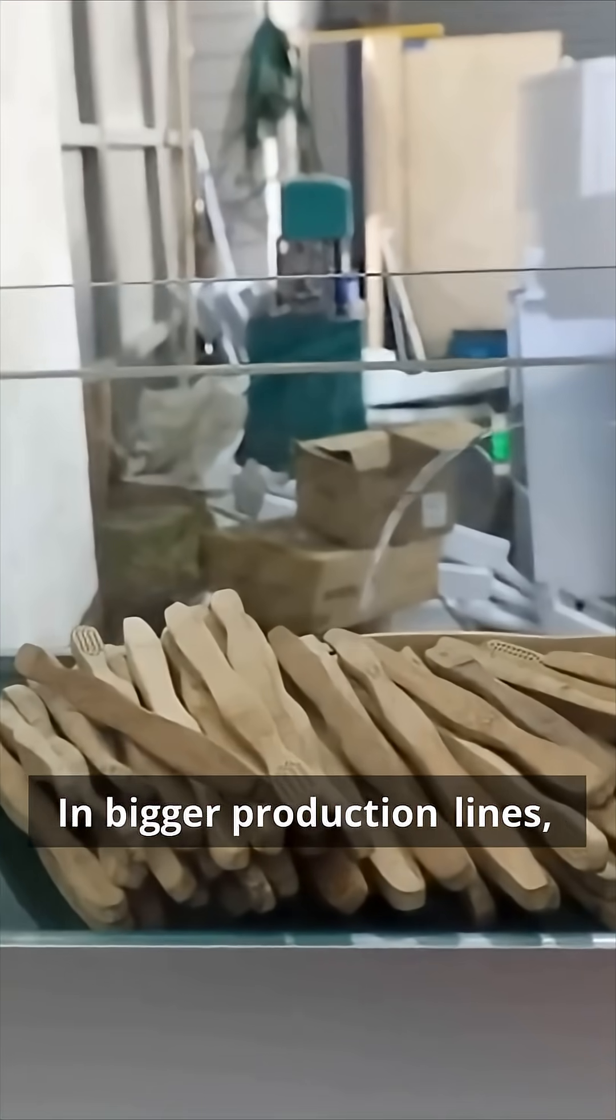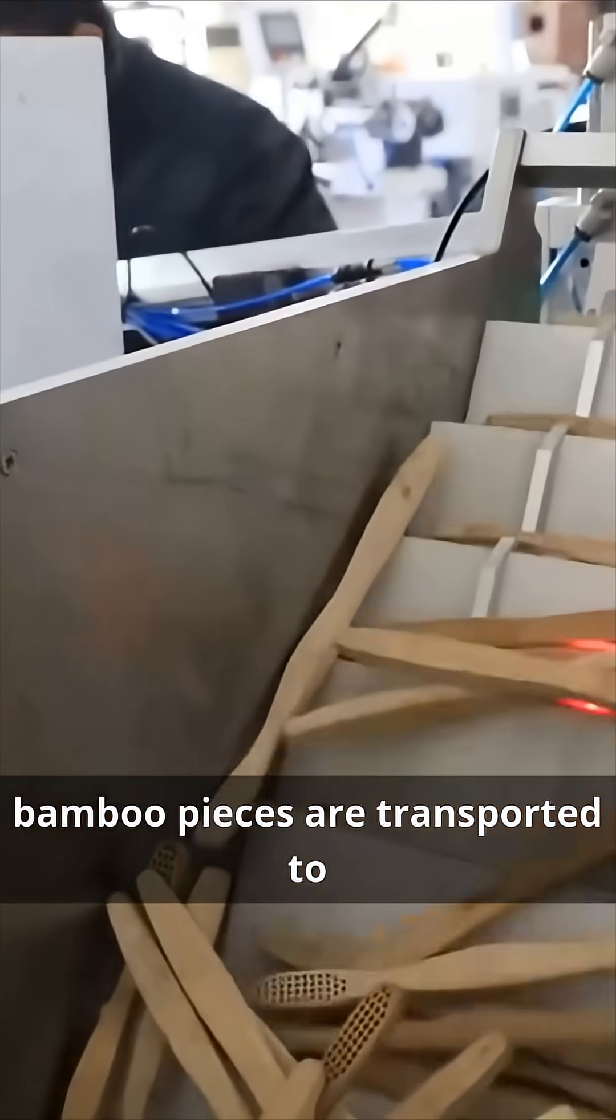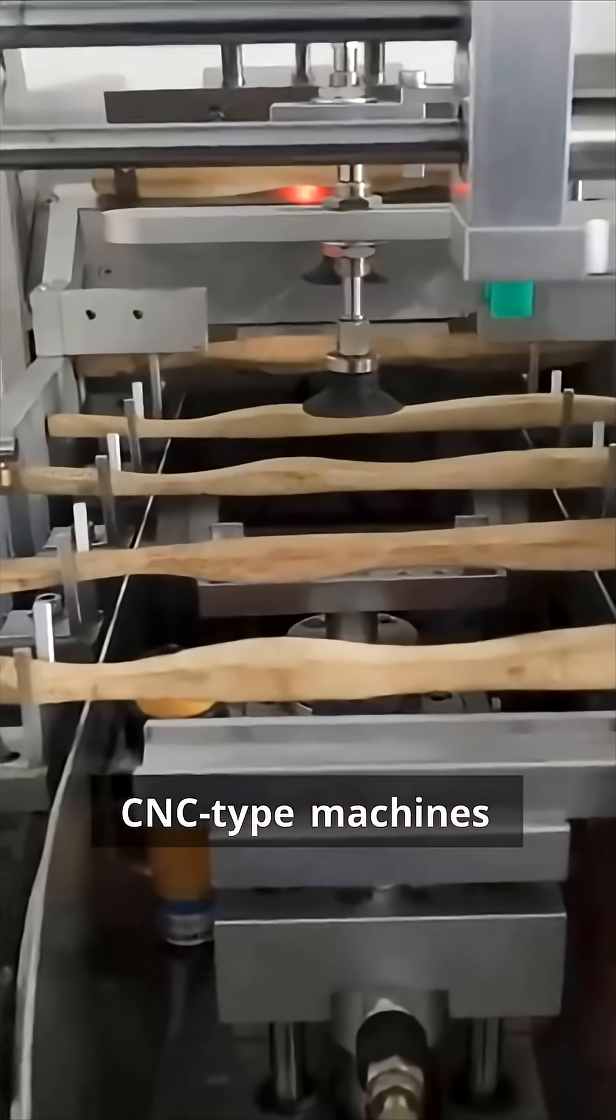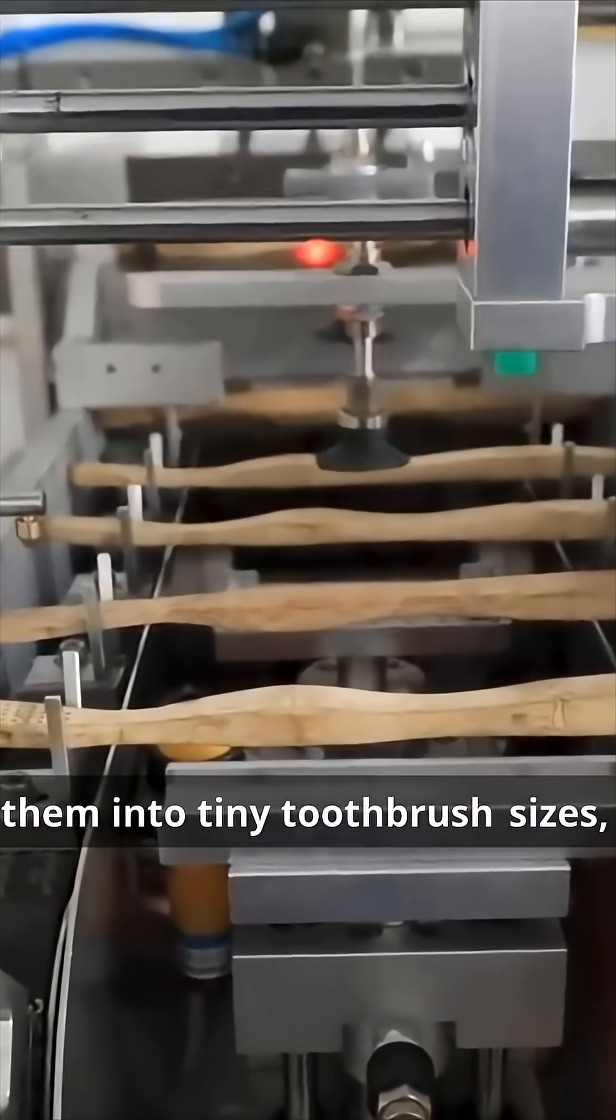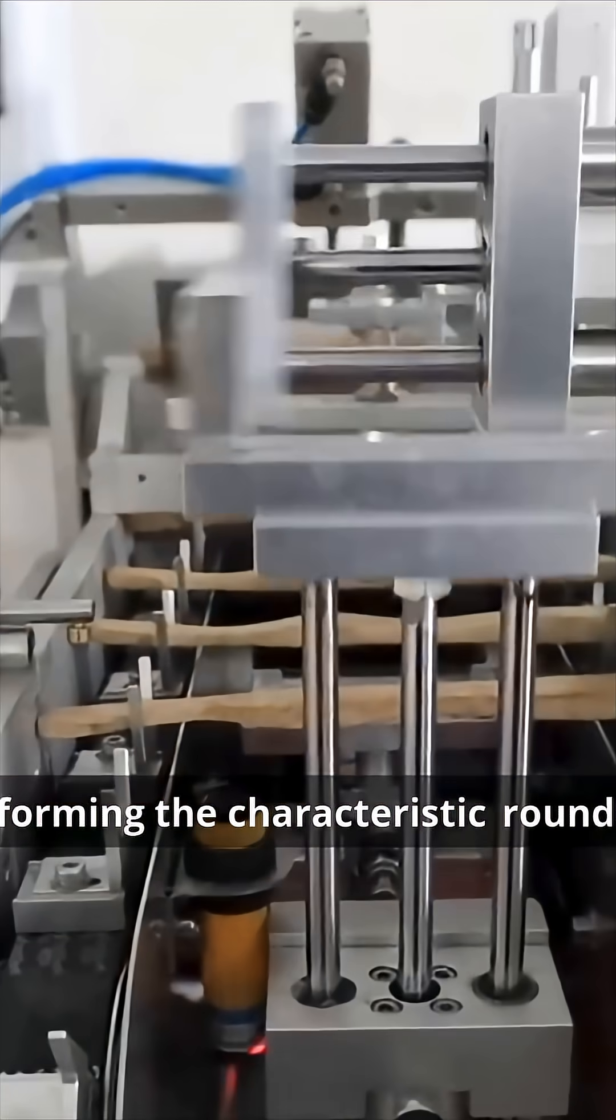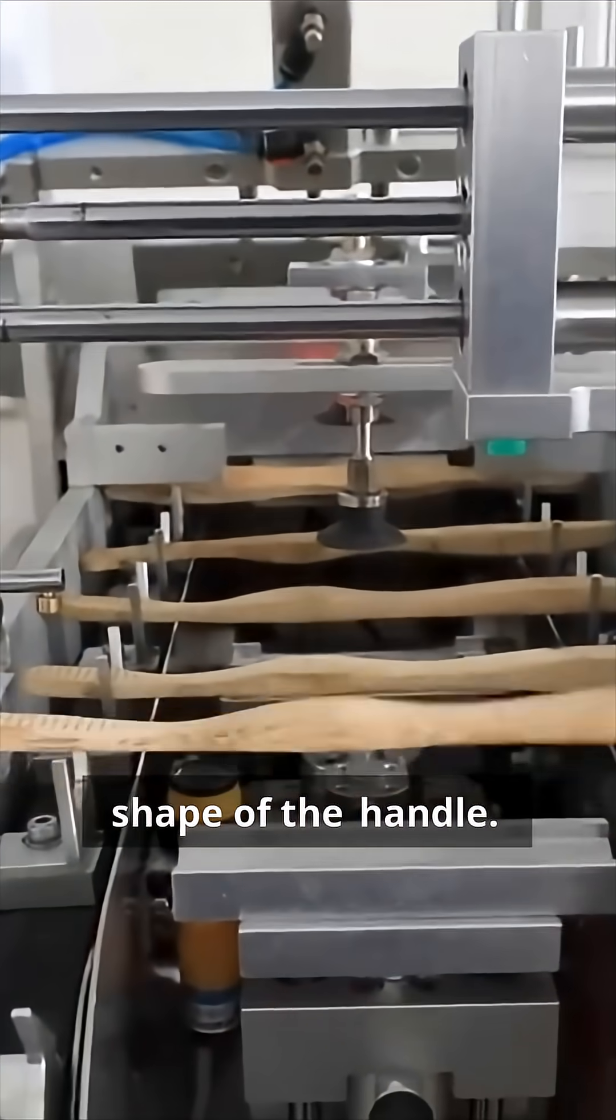In bigger production lines, bamboo pieces are transported to CNC-type machines programmed to precisely cut them into tiny toothbrush sizes, forming the characteristic round shape of the handle.